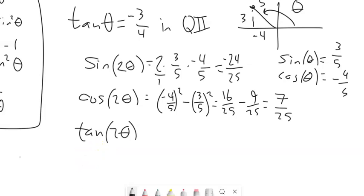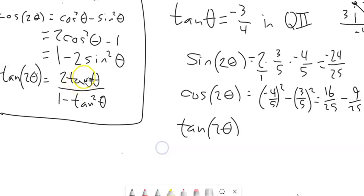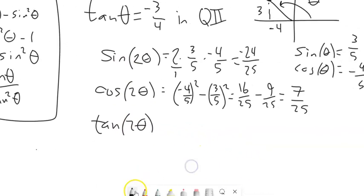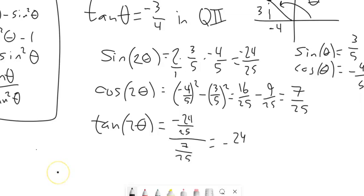For tangent, you can use the double angle formula — 2 times tangent over 1 minus tangent squared — or since we know sine and cosine, tangent is just sine over cosine. So it's negative 24/25 divided by 7/25. The 25ths cancel, giving us negative 24 over 7.